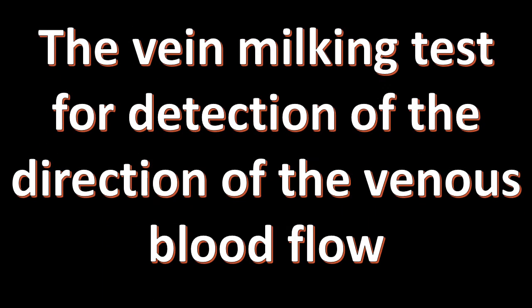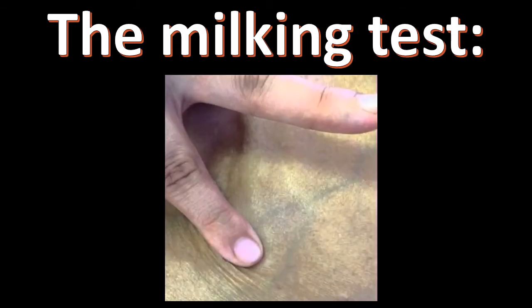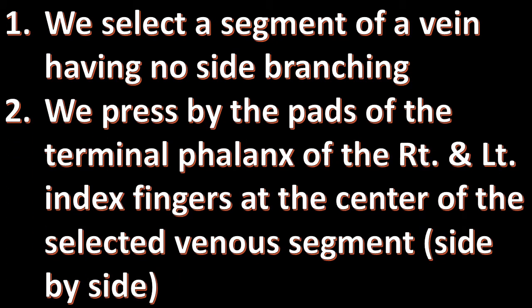The vein milking test for detection of the direction of venous blood flow. We select a segment of a vein having no side branching. We press by the pads of the terminal phalanx of the right and left index fingers at the center of the selected venous segment, placing the two pads side by side over its center.